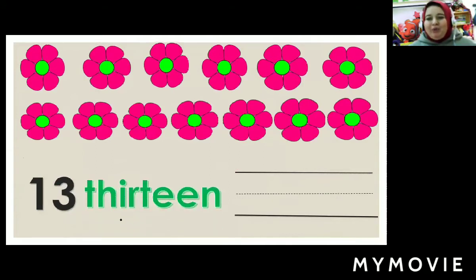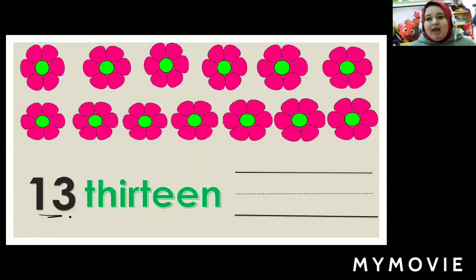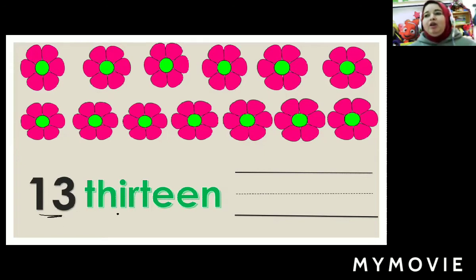Now we have a new number. What is this number? Thirteen. What is this number? Thirteen. Thirteen is one and three. One and three. And what's this word? Thirteen.